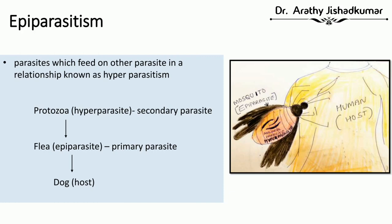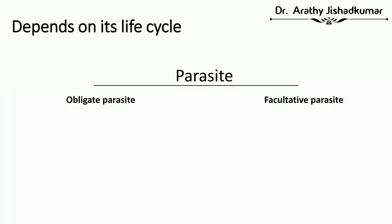Depending on its life cycle — that is, whether a parasite needs a host to complete its life cycle or not — there are two categories: obligate parasite and facultative parasite.